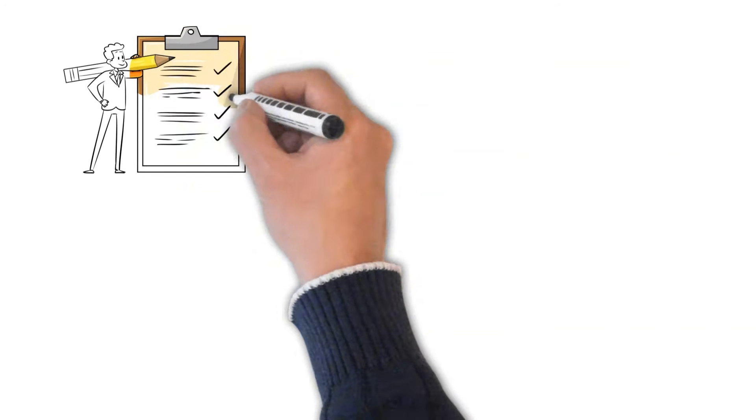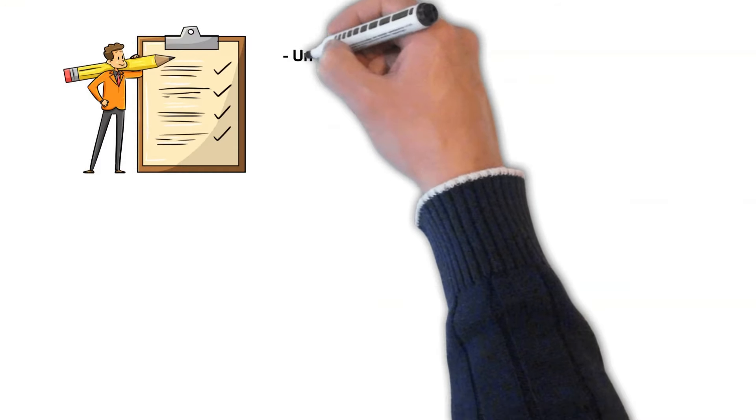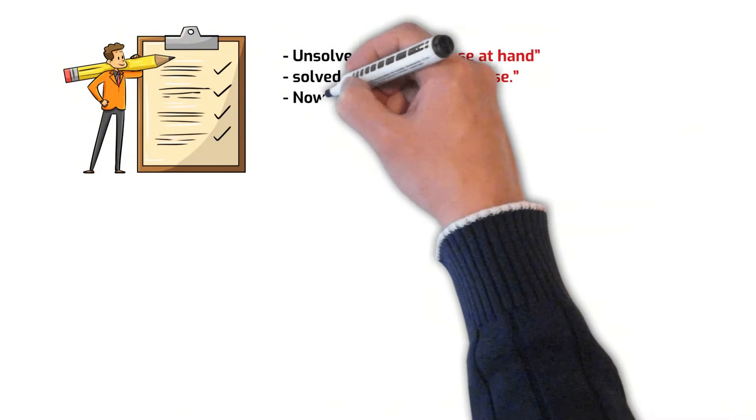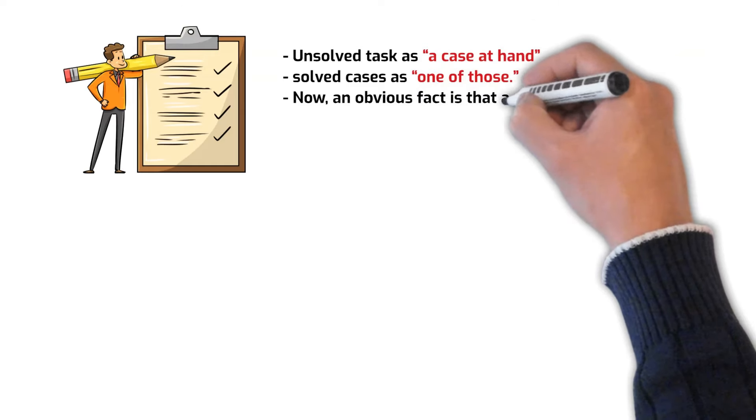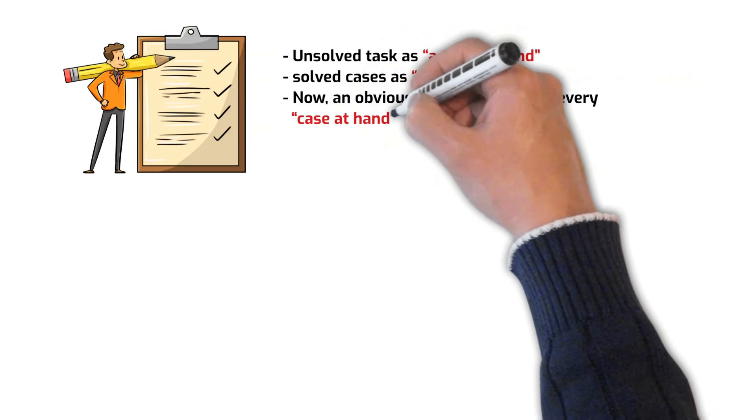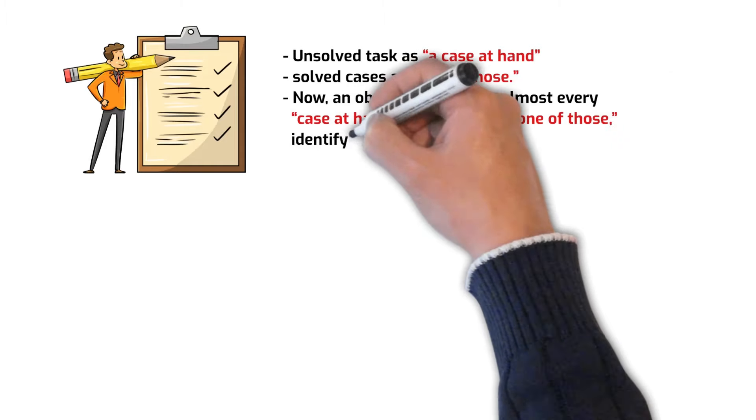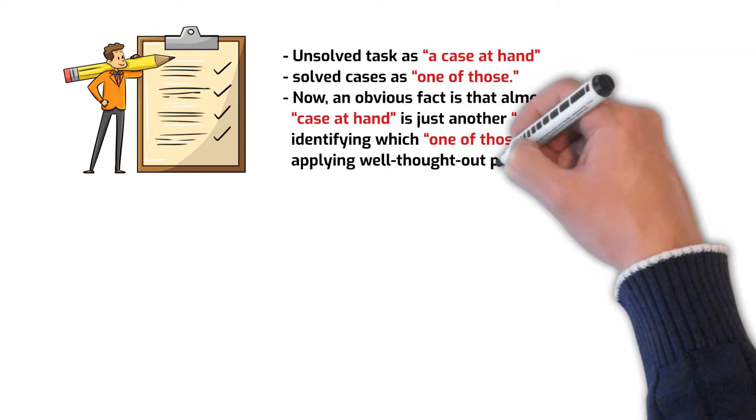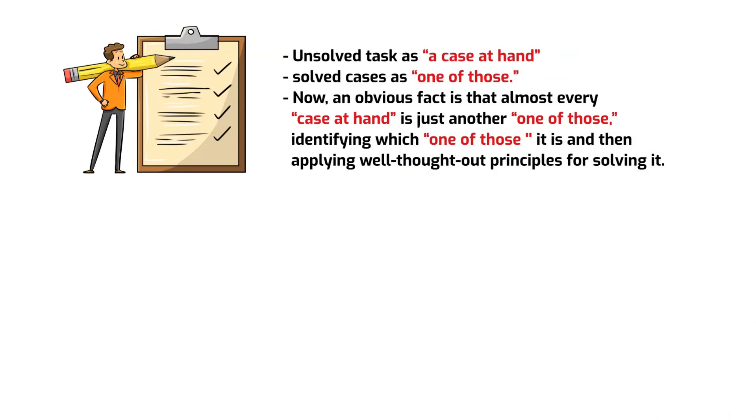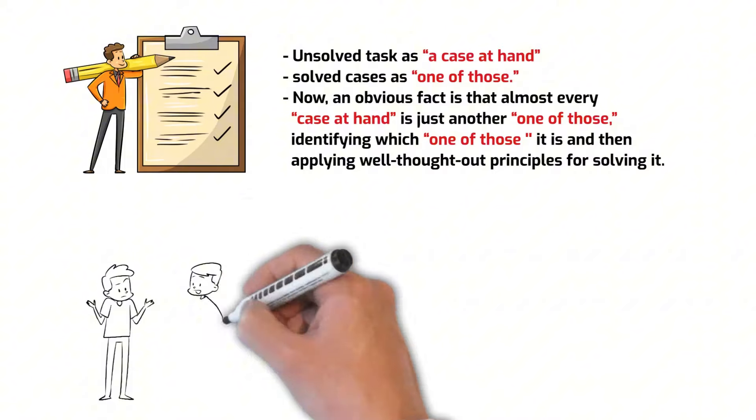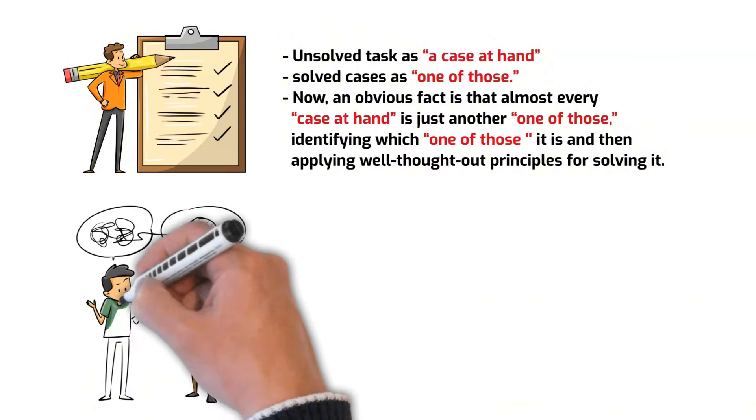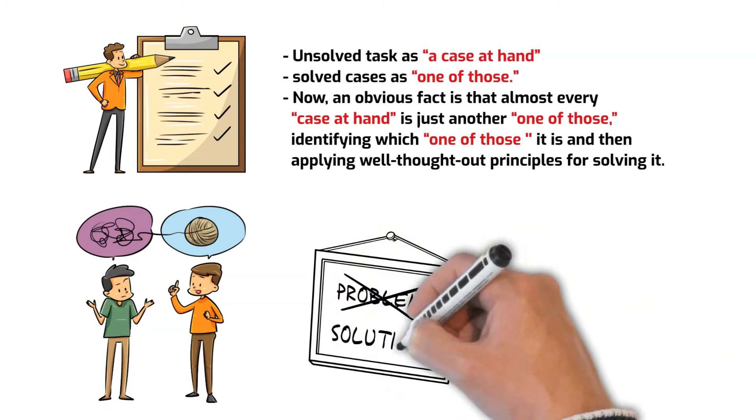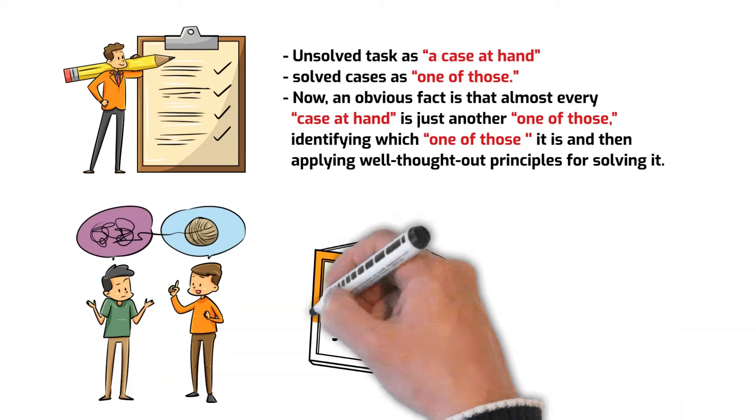Dalio maintains an evolving list of principles guiding his life and work. He classified an unsolved task as a case at hand and the solved cases as one of those. Now an obvious fact is that almost every case at hand is just another one of those, identifying which one of those it is and then applying well-thought-out principles for solving it. This simply means every new situation you encounter can be classified as a variation of a past event.